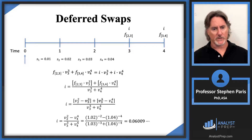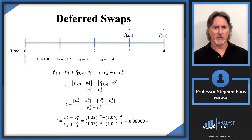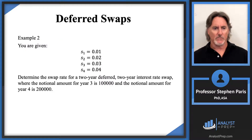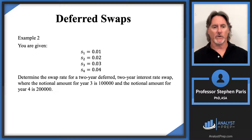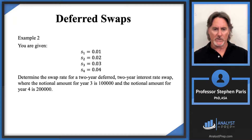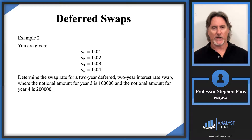That example assumed a level notional amount since none was specified. Now let's look at a second example with the same setup, but this time: determine the swap rate for a two-year deferred two-year interest rate swap where the notional amount for year three is 100,000 and the notional amount for year four is 200,000. Since the notional amounts are not equal, I have to keep them in my expression when determining the swap rate.